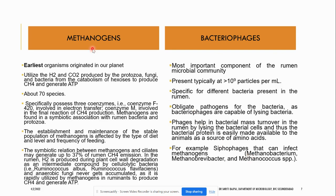Methanogens are archaebacteria. They use the CO2 and H2 produced by the protozoa, fungi, and bacteria in the catabolism of hexoses to produce methane for their energy generation. For that they have different types of coenzymes that are involved in the final reaction of CH4 production.